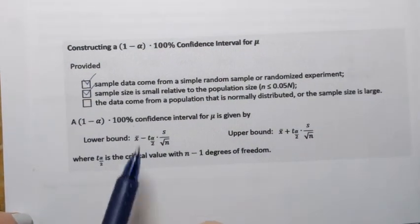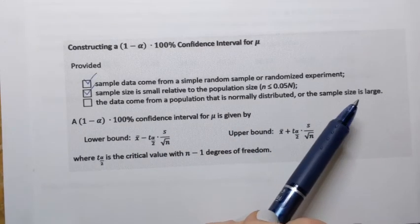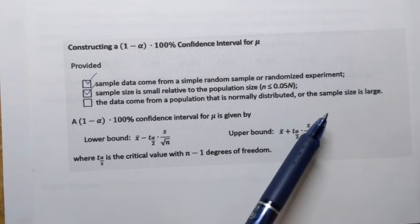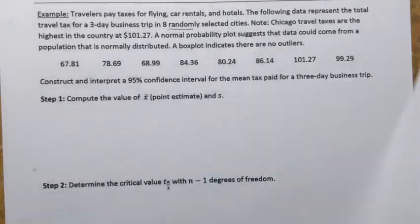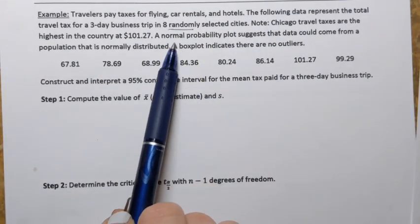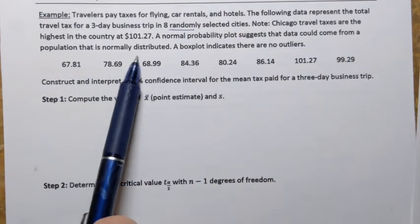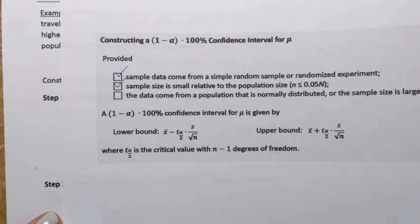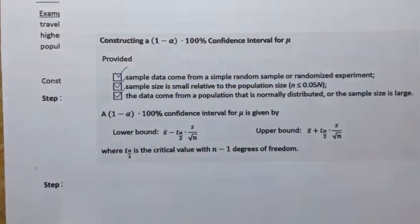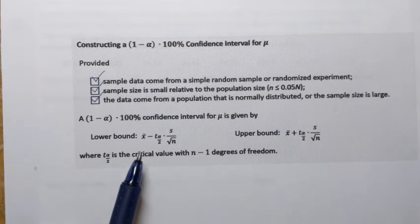For condition three, data should come from a normally distributed population, or sample size should be large. Our sample size is only eight, so it's not large. However, the problem states that normal probability plots suggest data could come from a normally distributed population, and the box plot indicates no outliers. That's sufficient to check off condition three, so all conditions are satisfied and we can proceed.